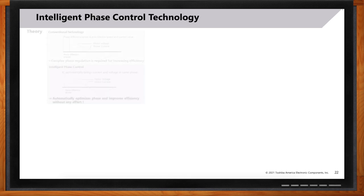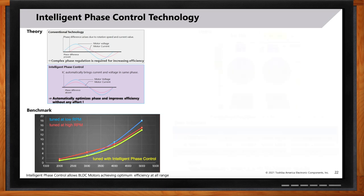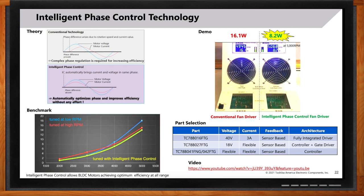Lead angle control can be a complex adjustment, but Toshiba motor control drivers have a solution with intelligent phase control technology. With conventional driving, a phase difference is generated depending on rotation speed and current value, resulting in increased power consumption. With intelligent phase control, the phases of the motor voltage and current can be adjusted automatically. In a demo comparing a conventional fan driver versus an intelligent phase control driver, the conventional one consumed close to 16 watts at 5,000 RPM, while the intelligent phase control one consumed just 8.2 watts — almost a 50% reduction in fan driving power.